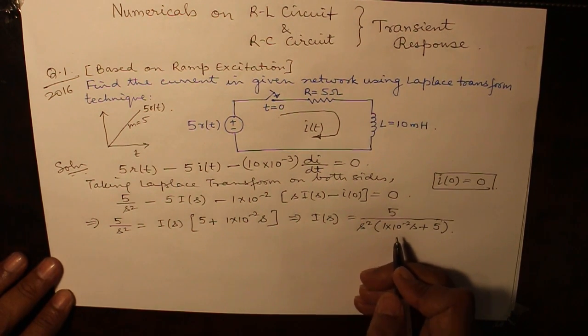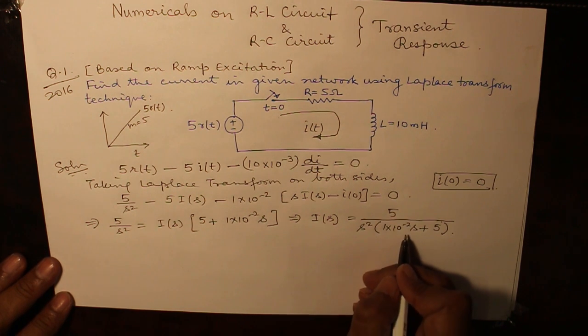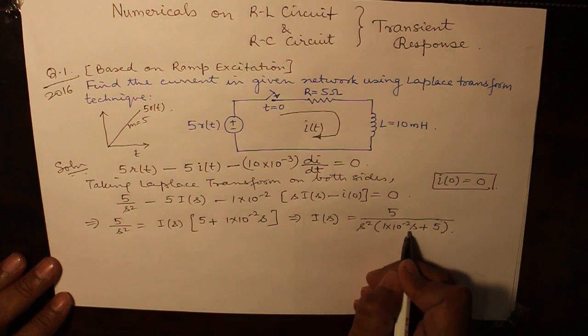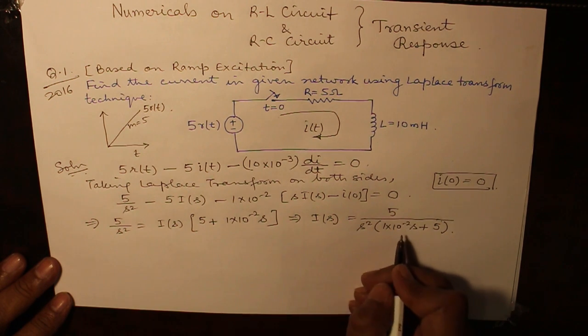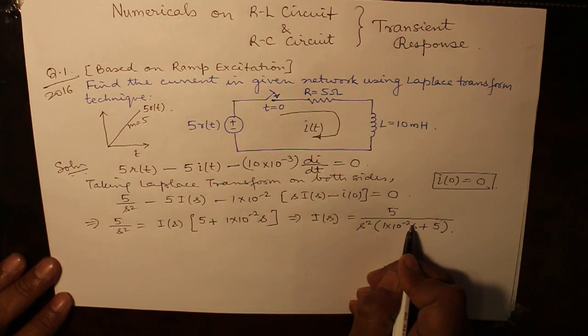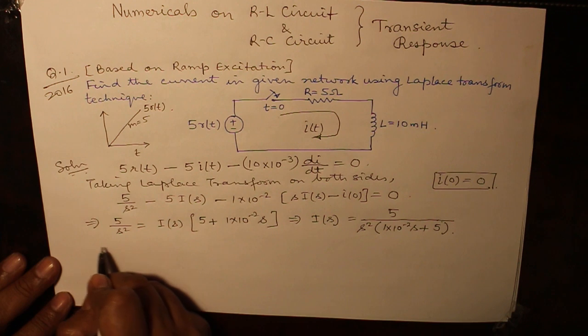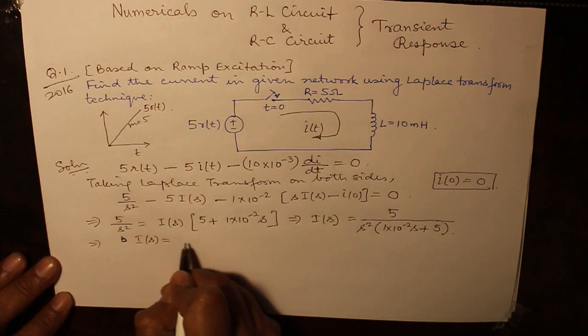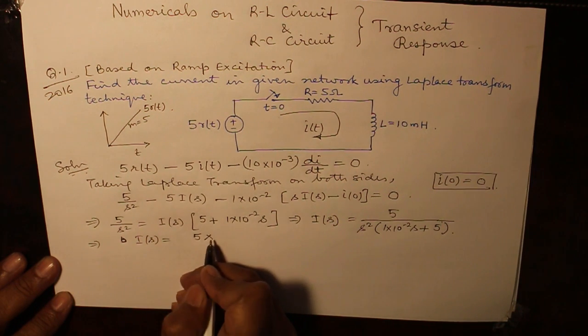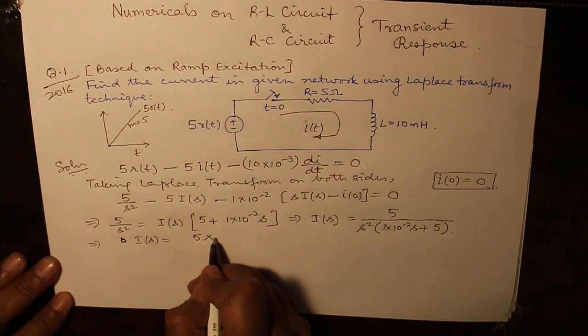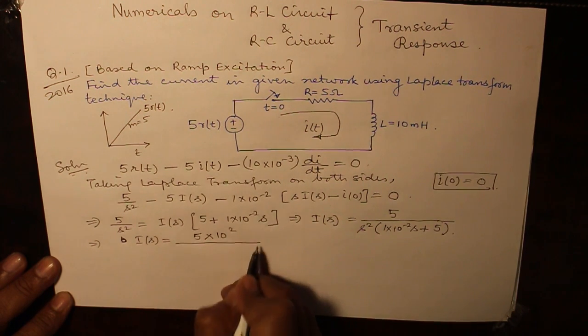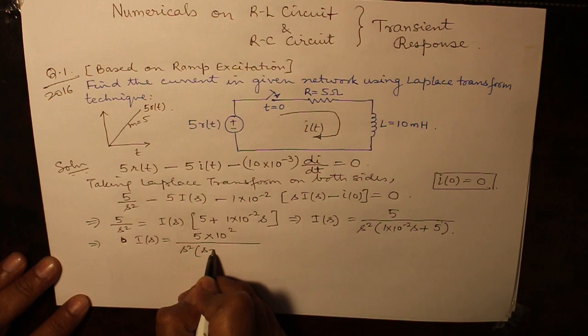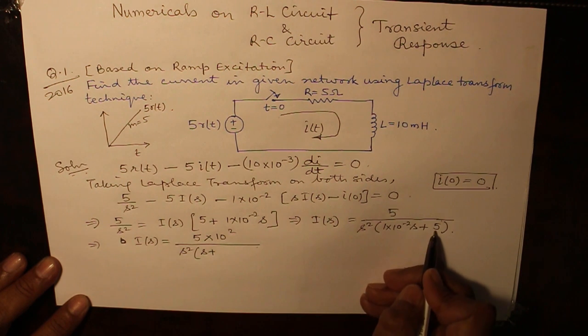Now before finding out the partial fraction, first and foremost thing that we always do is that whatever be the coefficient of S we take out common and bring it on the numerator. So from this term when you take out 1 into 10 raised to the power minus 2 common, this gives you IS equal to 10 raised to the power 2 over S square times S plus 500.